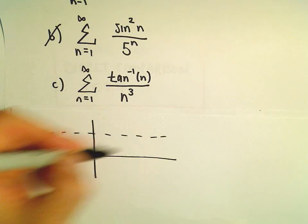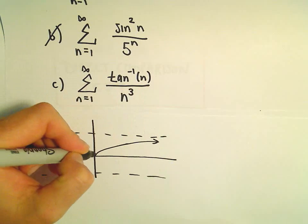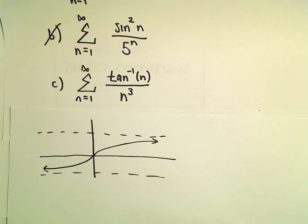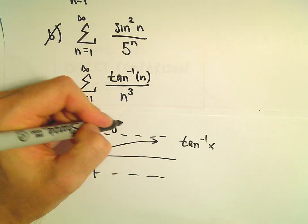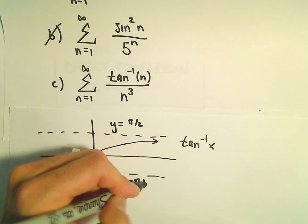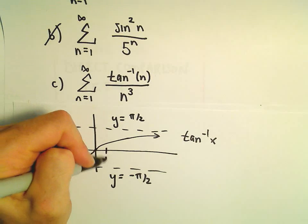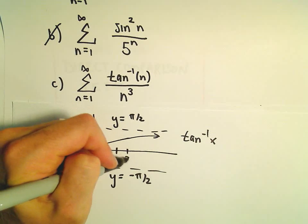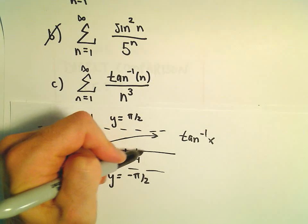Well, let's recall the graph of arctangent of x. So recall arctangent of x looks roughly like my little graph here. This has an asymptote at π/2 and at negative π/2. We're plugging in n equals 1, n equals 2, n equals 3, or equivalently x equals 1, x equals 2, x equals 3, x equals 4, etc.